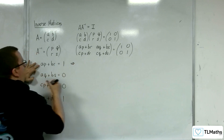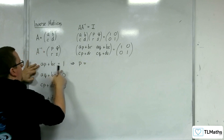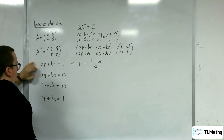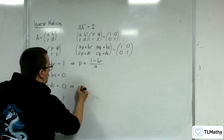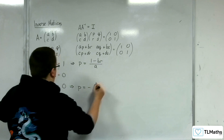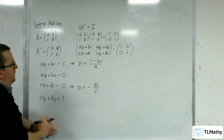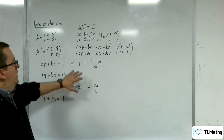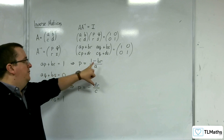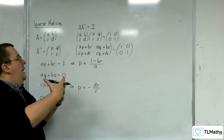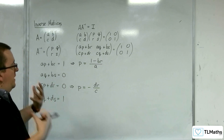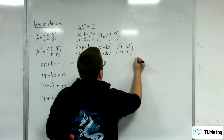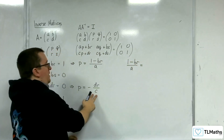So let's rearrange this equation to get P equals: subtracting BR from both sides and dividing by A gives P = (1 − BR)/A. For this equation, subtracting DR from both sides and dividing by C gives P = −DR/C. Because I want P, Q, R, and S in terms of A, B, C, D, putting these two equations equal to one another will leave just R with A, B, C, and D. So I'm going to put this equation equal to that one: (1 − BR)/A = −DR/C.